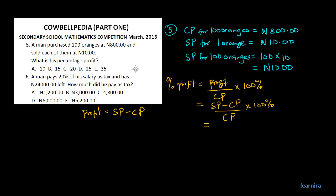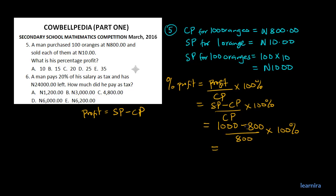The selling price for 100 oranges is 1,000 naira. So we have 1,000 minus the cost price of 800 naira, divided by the cost price of 800, times 100%.